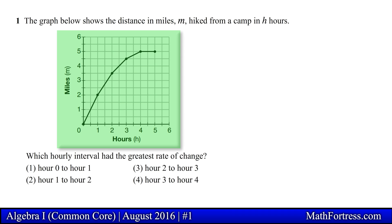In this problem we are provided with a miles vs. hours graph with miles represented along the y-axis and hours represented along the x-axis. We are asked to determine the interval in which the hiker had the greatest rate of change. In other words, we are asked to determine the interval in which the hiker had the greatest velocity.